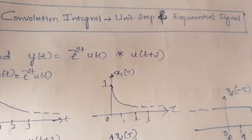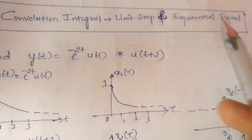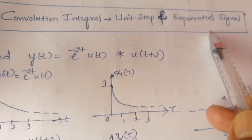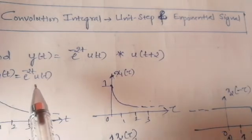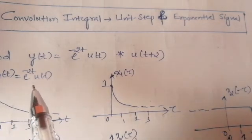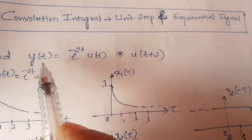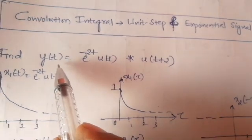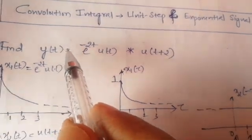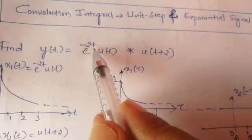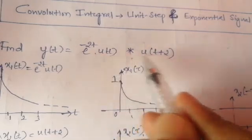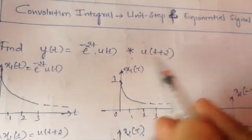Hi friends. In this video we will discuss the convolutional integral between a unit step signal and an exponential signal. Find the convolutional integral for the given two signals, or perform this operation: y of t equal to e to the power minus 2t, u of t, convolution with u of t plus 2.